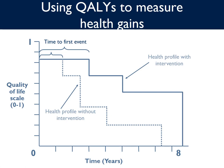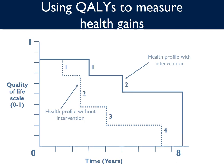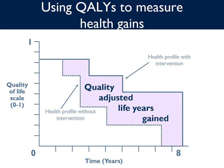Let's look at the differences in these two health profiles. First, time to first event is longer with the intervention. There is also a gain of about one year of life with the intervention. We can also see that there are fewer events with the intervention, resulting in a better quality of life. A QALY is able to capture all these differences in a single metric, and the gain in QALYs with the intervention is given by the shaded area. In session 2, we will discuss QALYs in much greater detail.